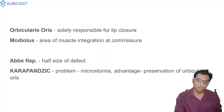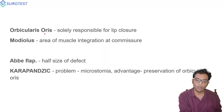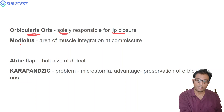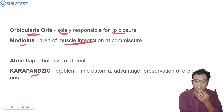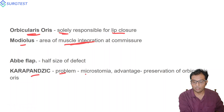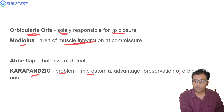Key anatomy points: orbicularis oris is the main muscle responsible for lip closure and competence. The modiolus is the area of muscle integration at the commissure. The problem with the Karapandzic flap is the chance of microstomia, but the advantage is preservation of the orbicularis oris muscle.